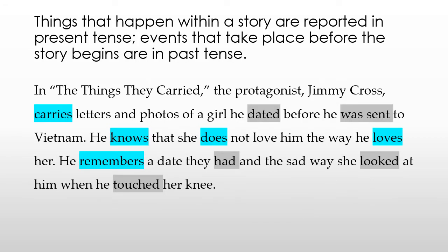Things that happen within a story are reported in present tense, but events that take place before the story begins are in past tense. So sometimes this can be kind of confusing. If you think about the story we read, 'The Things They Carried,' some things happen within the story itself — Ted Lavender is killed within the story. The events in the story switch back and forth from past to present within Jimmy Cross's memory, but anything that happens within the confines of the story happens in present tense.